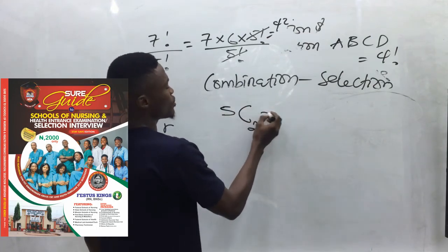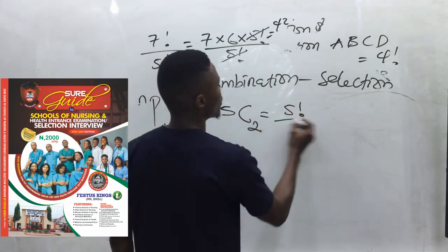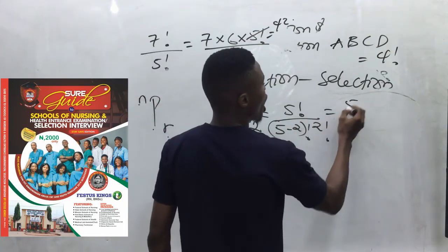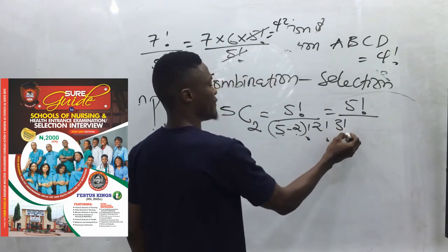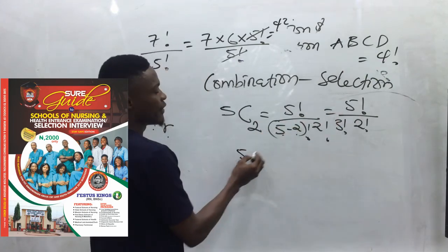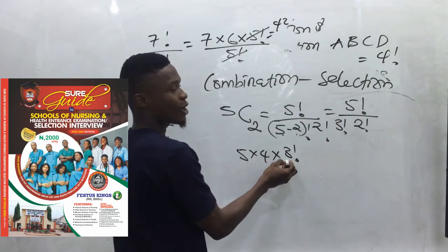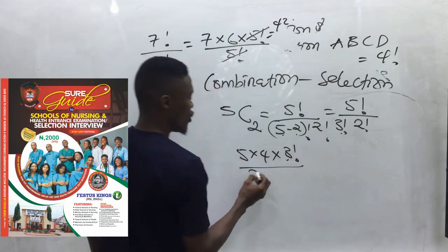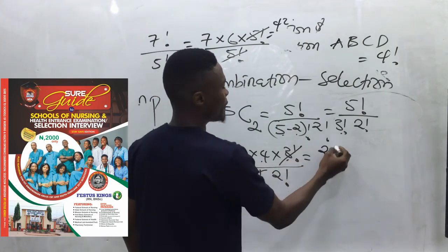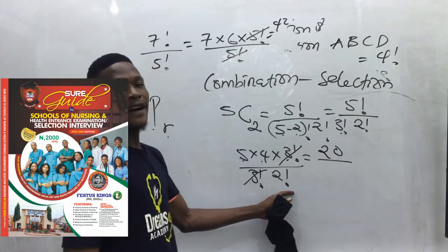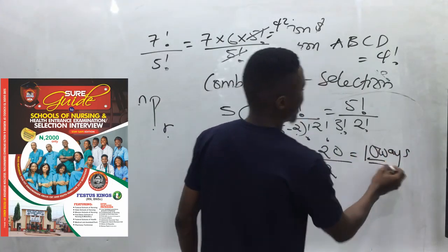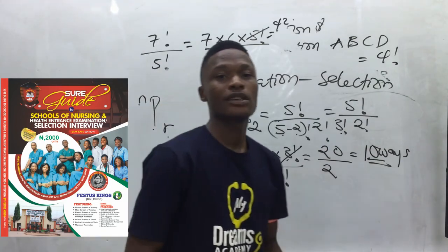Five combination two equals five factorial over (five minus two) factorial times two factorial = five factorial over three factorial times two factorial. Simplify: five times four times three factorial over three factorial times two factorial. Three factorials cancel, leaving 20 over two factorial. Two factorial is two times one = two. So 20 divided by 2 gives ten ways.